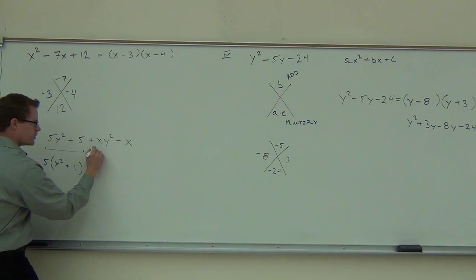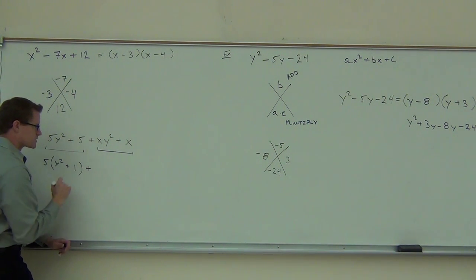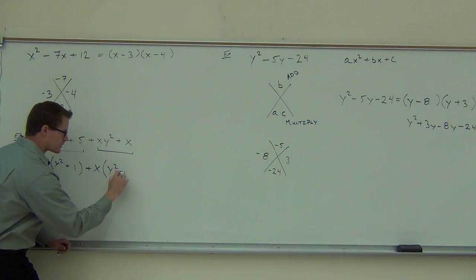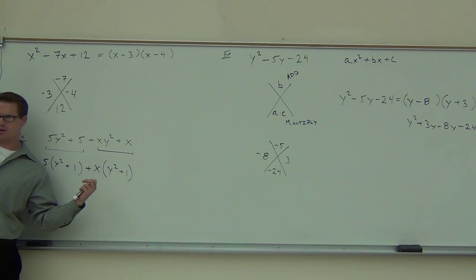We're going to look at the next one. So we ignore the part we just did. We look at this part. Is there anything in common between XY squared plus X that we can factor out? Let's factor out the X. We have to factor out the positive X. We're going to have that plus there still. What's going to be remaining if we factor out the X? Y squared plus 1. Perfect. So we use some basic factoring here, factoring the 5, factoring the X, to make it in this form.